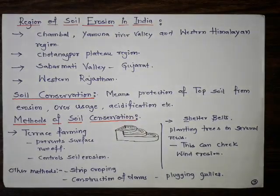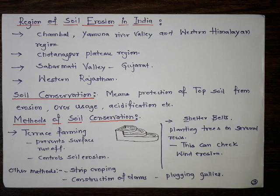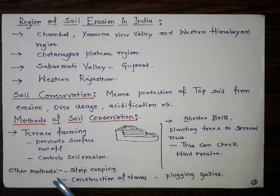There are different methods used for conservation of soil. For example, terrace farming, where the slope is cut in the form of terraces to prevent surface runoff and reduce the velocity of water. In board examinations, students should note that the advantages of terrace farming include preventing surface runoff and helping in controlling soil erosion. Other methods include strip cropping and construction of dams.